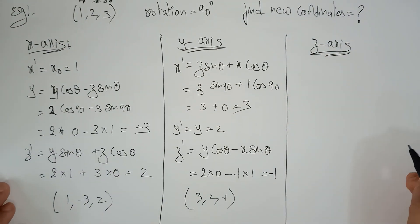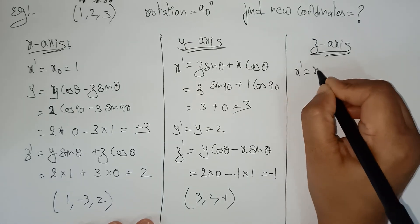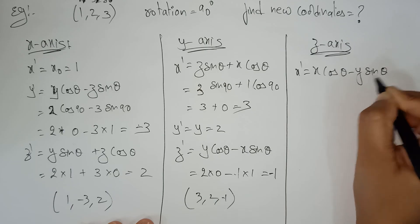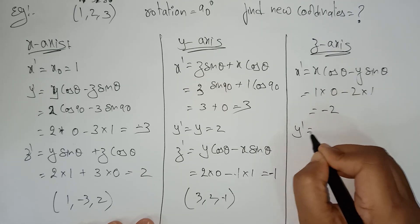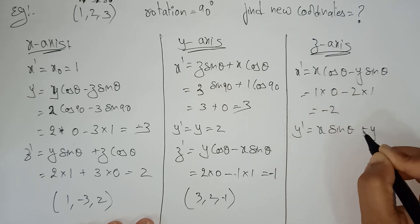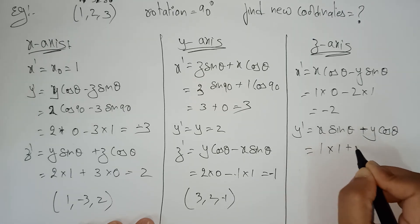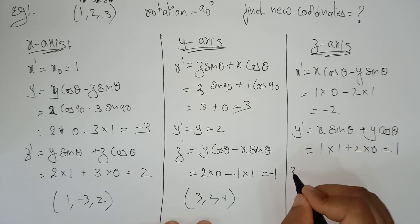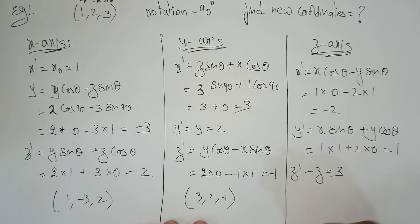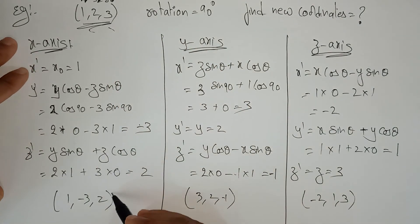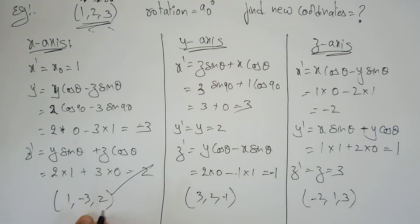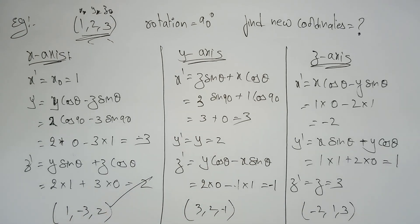For z-axis: x dash equals x cos theta minus y sin theta = 1×0 minus 2×1 = minus 2. y dash equals x sin theta plus y cos theta = 1×1 plus 2×0 = 1. z remains the same = 3. So new coordinates for z-axis rotation are (minus 2, 1, 3). To summarize: original (1,2,3) gives x-axis (1, minus 3, 2), y-axis (3, 2, minus 1), z-axis (minus 2, 1, 3). This concludes 3D rotation. Thank you.